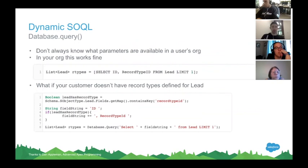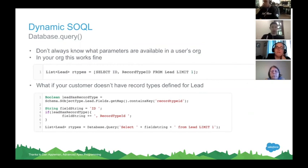We saw database.query earlier when talking about dynamic SOQL. Here's a use case where I'm installing my package in a customer org that may or may not have lead record types available. My first query — selecting record type ID from leads — if the org hasn't enabled record types for leads, they're going to get an error message. In the dynamic example below, we check to see if a lead object has a record type ID field. If so, we'll include it in our SOQL query. If not, we'll just query for ID and ignore that functionality. Very useful when we don't necessarily know what features people have enabled.